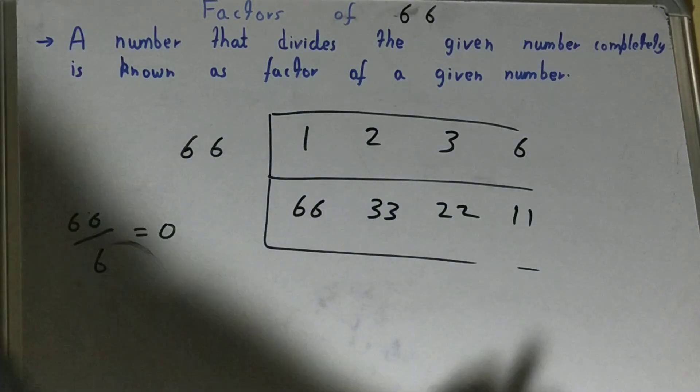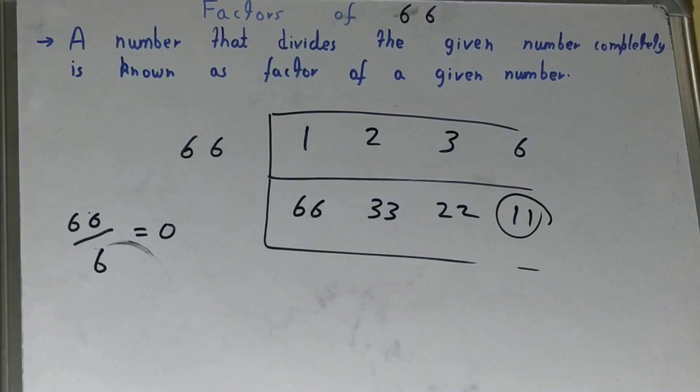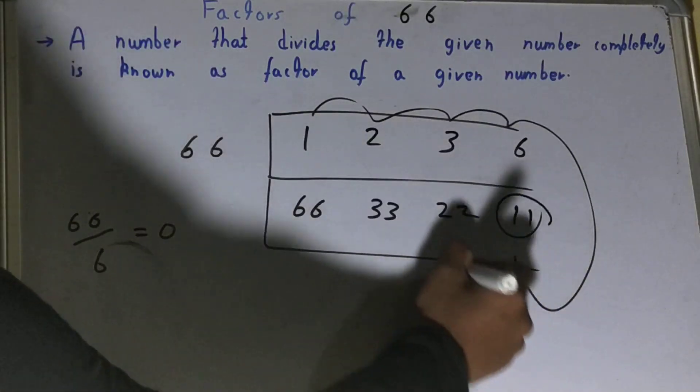Now one thing you need to see: because you've got a prime number in the second row, remember this—you don't need to check any further. Your work is done, and your set of factors for the number 66 will be 1, 2, 3, 6, 11, 22, 33, and 66.